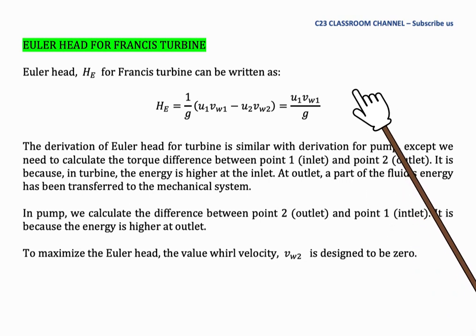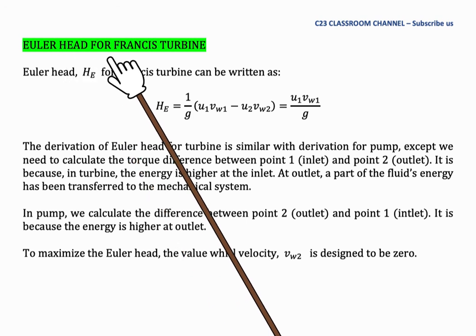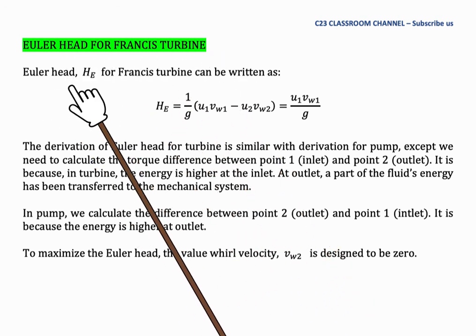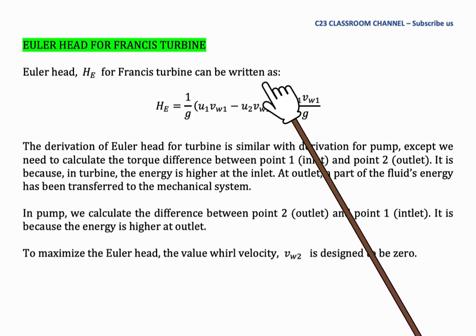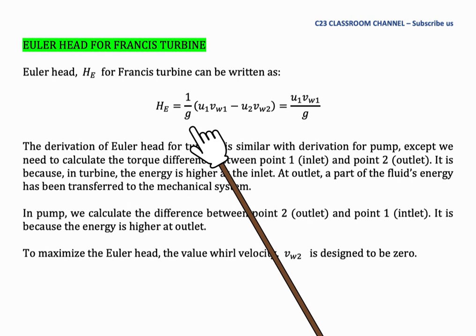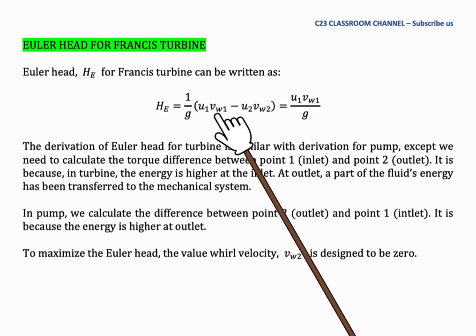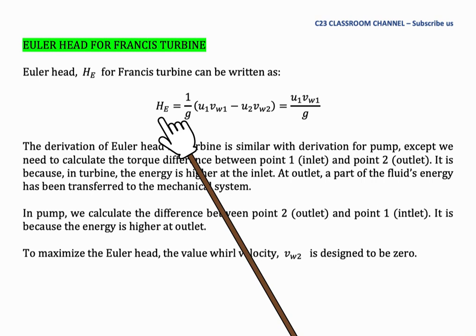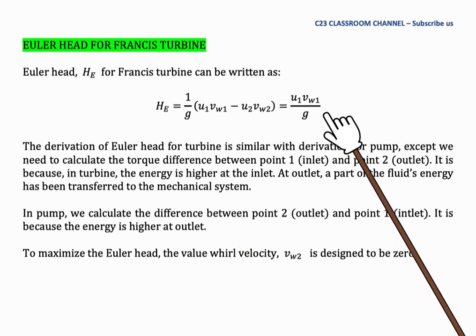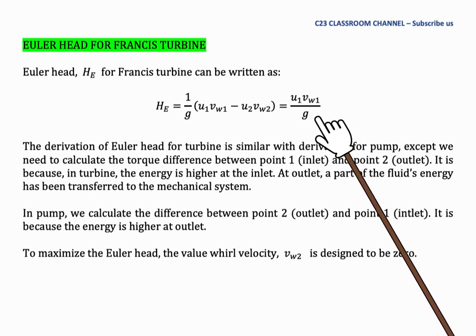Now I would like to introduce you to the Euler head for Francis turbines. Euler head written as HE for Francis turbines can be written as HE equals 1 over g times U1 Vw1 minus U2 Vw2. And normally Vw2 at point number two here will equal zero. So we can reduce the Euler head for Francis turbines to equal U1 Vw1 over g.